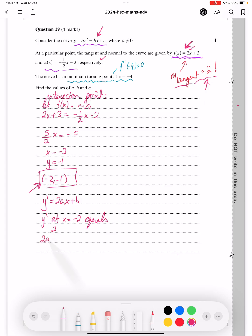So that would mean that 2a times minus 2 plus b equals 2. So that gives you minus 4a plus b equals 2. Box that. Call that equation 1, we'll come back to it.